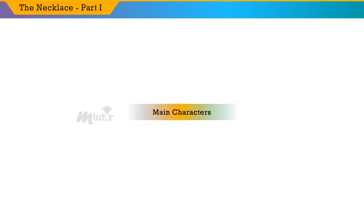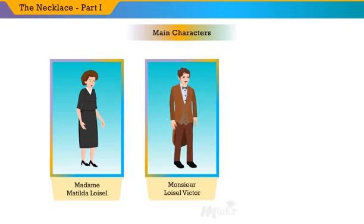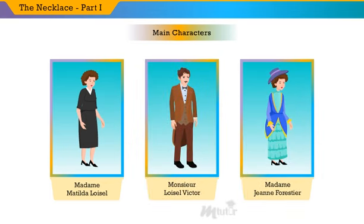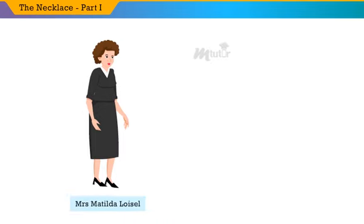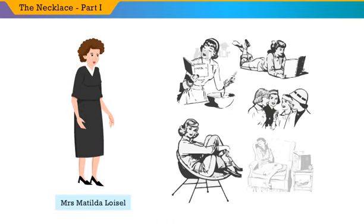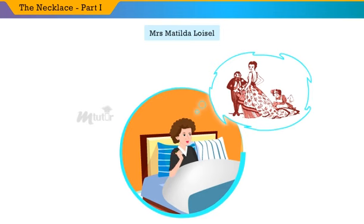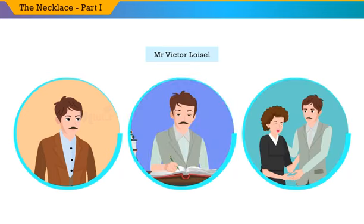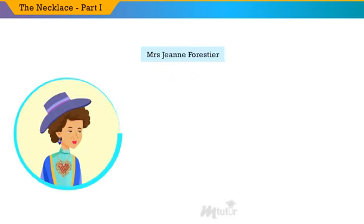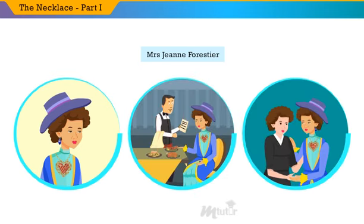The main characters of the story are Madame Mathilde Loiselle, Monsieur Loiselle Victor, and Madame Jeanne Forrestier. Before we get into the story, here is a short introduction about each character. Mathilde, the main character of the story, is one of those prettiest young ladies who expects more luxury and comforts in life. She is always discontented and unhappy with her life. Mr. Loiselle is a very simple, soft-spoken, and caring personality. Madame Jeanne Forrestier is a rich, friendly, generous woman and a close friend of Mrs. Mathilde Loiselle. Now, let's get into the story.